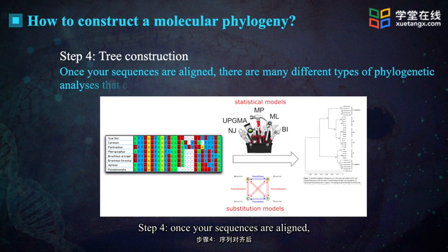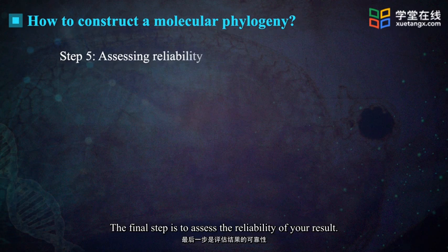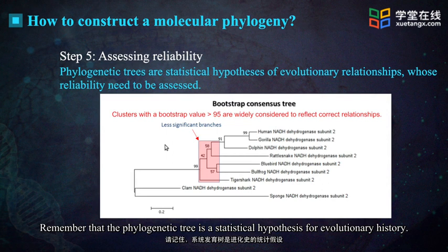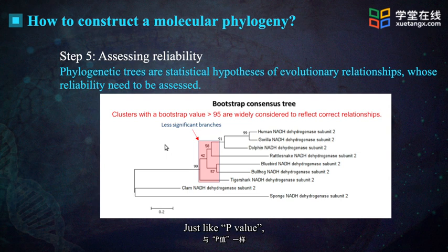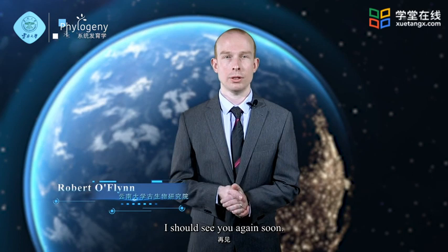Step four: once your sequences are aligned, you can use different methods to construct your tree — I will provide more details in a later section. The final step is to assess the reliability of your result. Remember that the phylogenetic tree is a statistical hypothesis for evolutionary history. Just like a p-value, there are some statistical parameters as indicators of reliability for the phylogenetic tree. I will provide more details in the later section. Thank you very much for listening. I shall see you again soon.